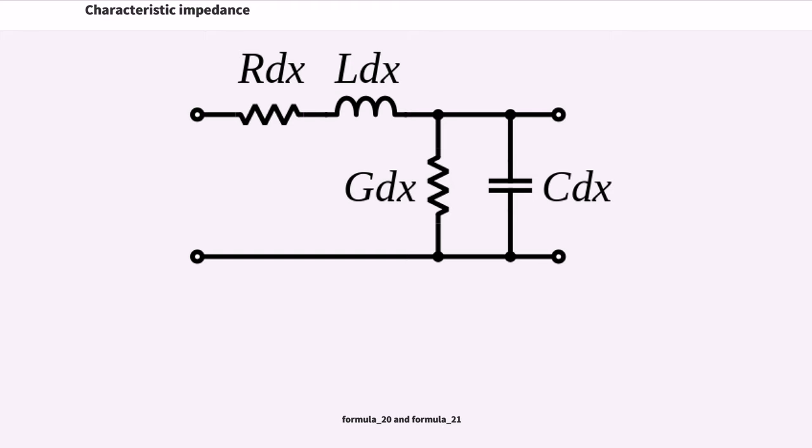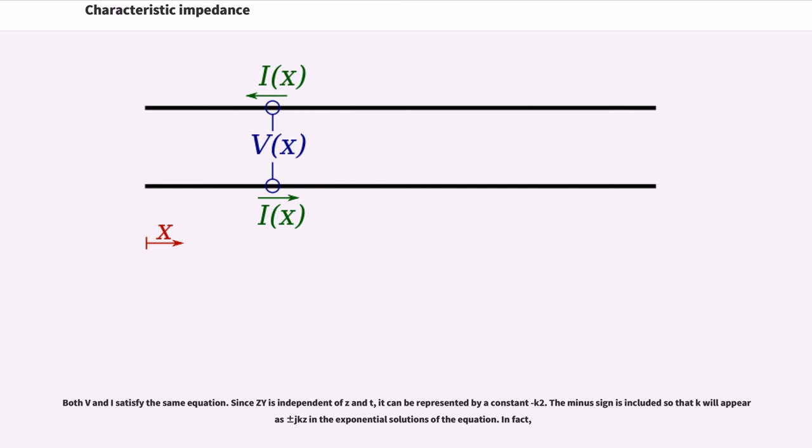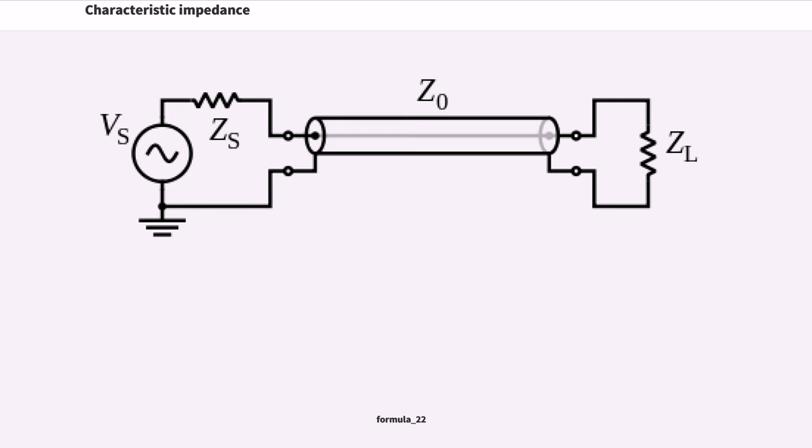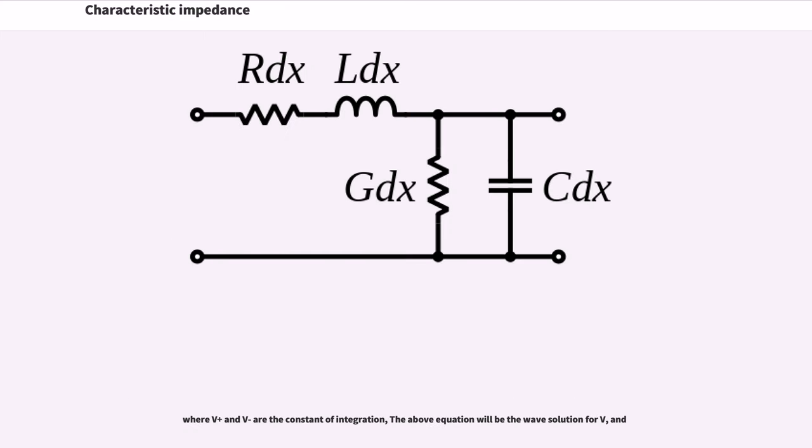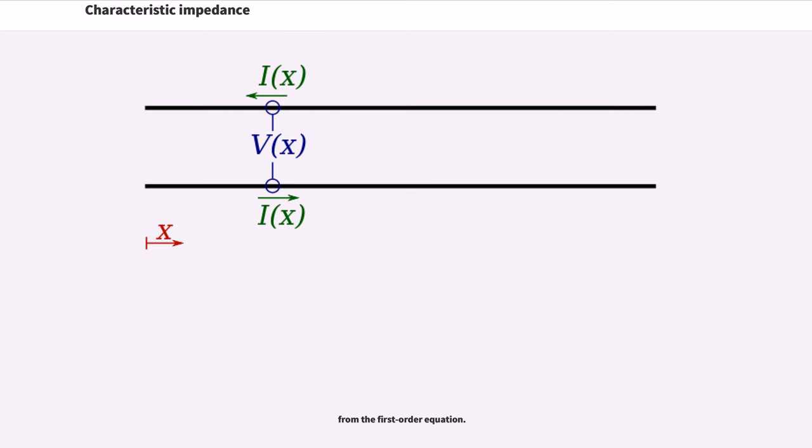Formula 20 and Formula 21 show that both voltage and current satisfy the same equation. Since ψ is independent of z and t, it can be represented by a constant K². The minus sign is included so that K will appear as plus or minus in the exponential solutions of the equation. In fact, Formula 22 shows that V_plus and V_minus are the constants of integration. The above equation will be the wave solution for V, and Formula 23 follows from the first-order equation.